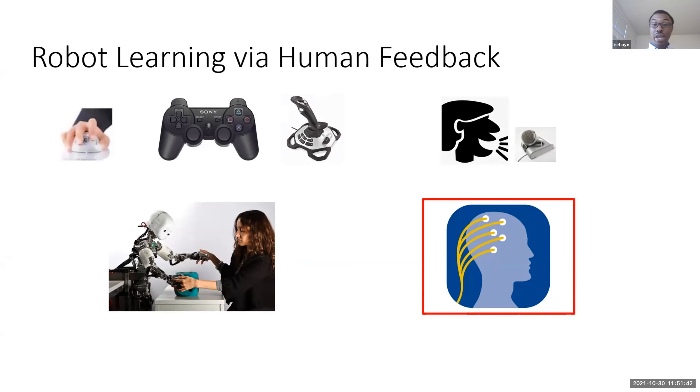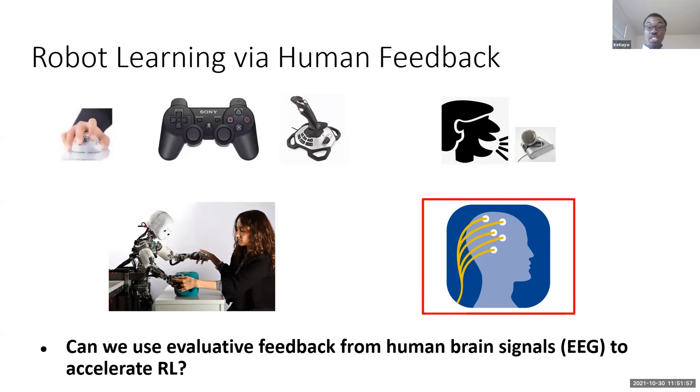My research in this space is inspired by a finding in neuroscience that says that whenever a human sees a task going wrong, there's an error signal that is fired in the brain, which is measurable using the brain computer interface. My research has been focused on using this error signal as evaluative feedback to teach robots how to perform different tasks.